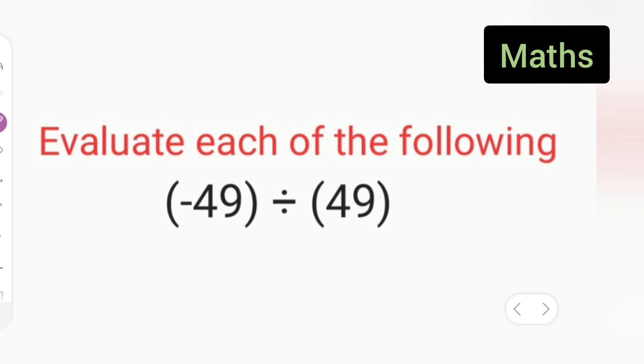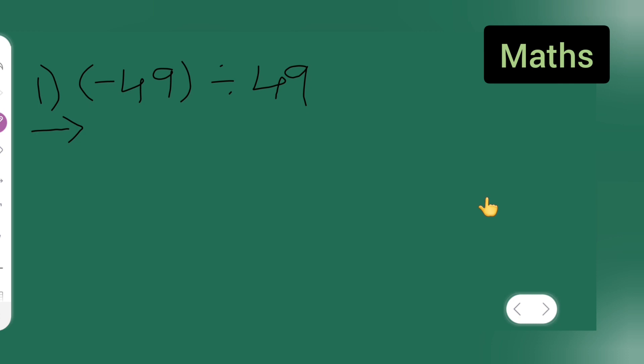So let us start. What you'll have to do is first take down the question, that is minus 49 divided by 49. So what you'll have to do over here is take this 49 as it is.